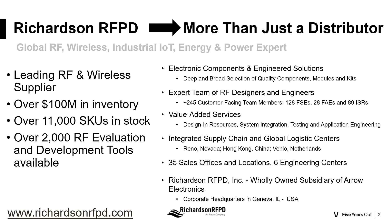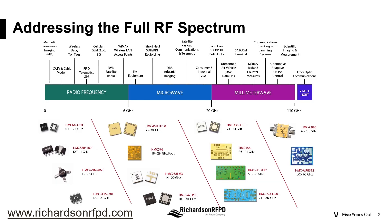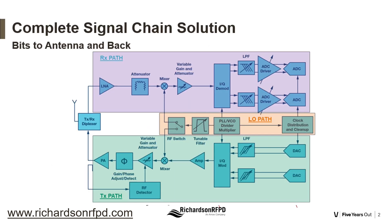Richardson RFPD is a worldwide distributor for RF and microwave components. If you're interested in getting a broad view on RF and microwave components available in the market today, please talk with one of our representatives. We cover components with frequency ranges from DC to 110 gigahertz and components from high-speed converters and DC power to antennas.